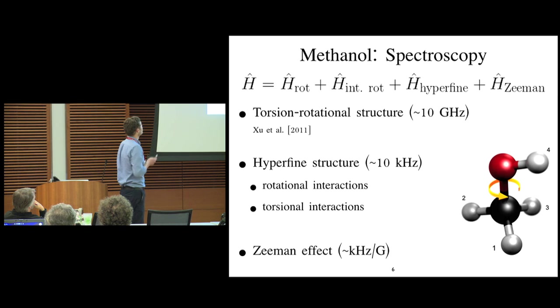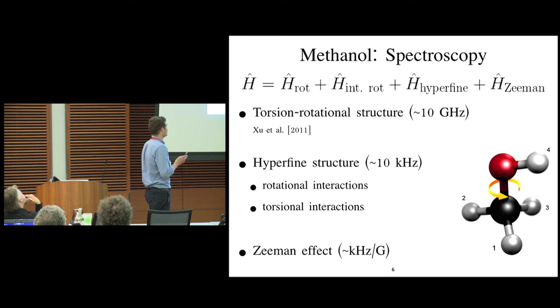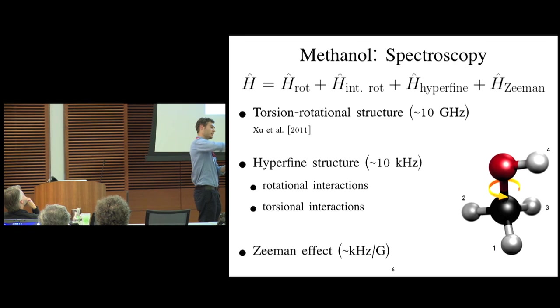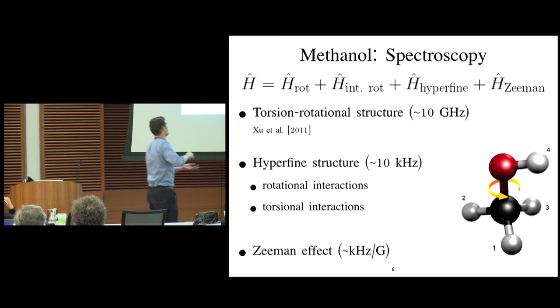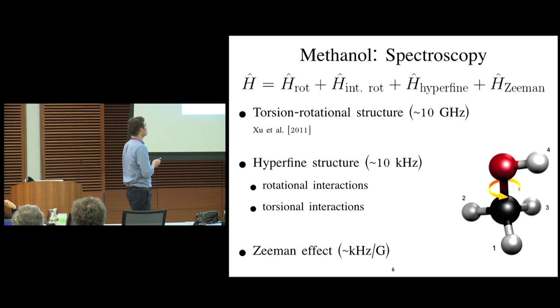So the Hamiltonian of Methanol that's relevant for the maser transitions we're interested in consists of a rotational part, a hyperfine part, and a Zeeman part. And the rotational part is kind of complicated because Methanol is a molecule that also can rotate internally. That means about the CO axis, the molecule can rotate internally, or torsional motion this is called. And this has been worked out by Xu et al to a brilliant precision, and we can use that structure as a template to figure out what the hyperfine structure is.